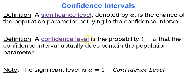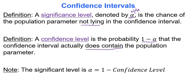Every confidence interval has both a significance level and a confidence level. The significance level, denoted by the Greek letter alpha, is the chance of the population parameter not lying in the confidence interval. The confidence level is the probability — 1 minus alpha — that the confidence interval actually does contain the population parameter. For example, a 95% confidence level means there's a 95% chance the population proportion is contained in that interval, and a 5% chance it is not. Alpha equals 1 minus the confidence level.